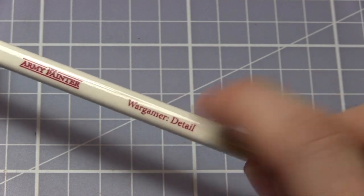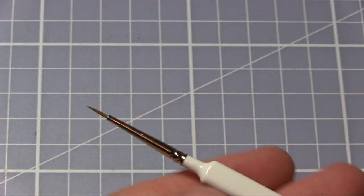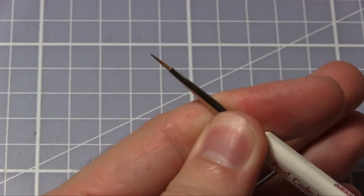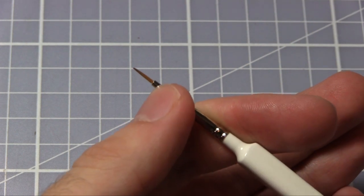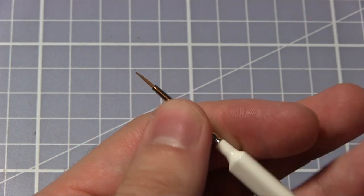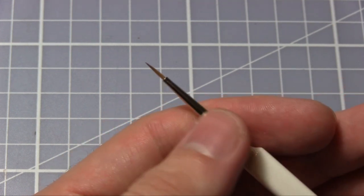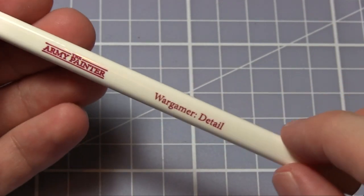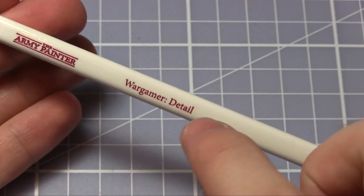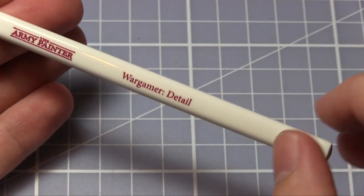With the detail brush, we are starting to get down to the realms of the more specialist brush. These are reserved for jobs like painting teeth or applying a small amount of wash or glaze to the grooves of someone's face. It's also good if you want to apply those tiny little black lines of text that you see on purity seals.